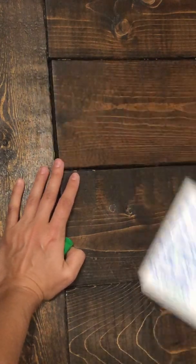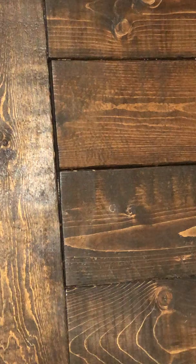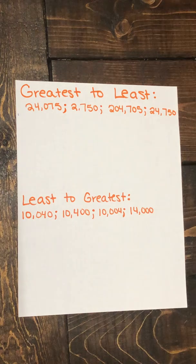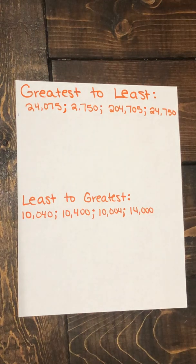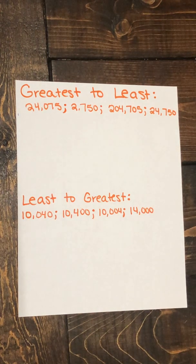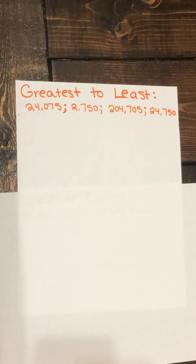So we have two examples today. The first example we're going to order numbers from greatest to least and the second example we're going to order numbers from least to greatest. So let's just focus on the first example. The directions here are very important, so make sure that we're putting them in order from greatest to least.